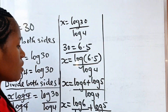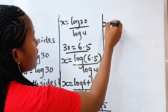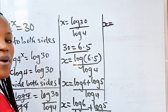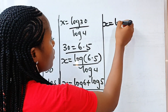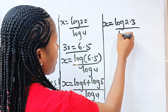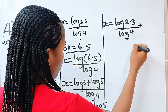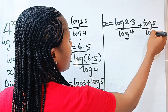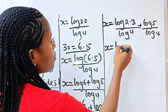Now let's continue. Looking at this, 6 can be expressed as 2 multiplied by 3. So we have log(2 × 3) divided by log 4 plus log 5 divided by log 4.